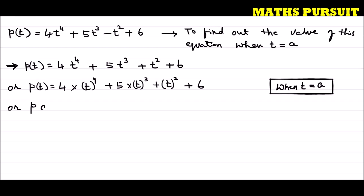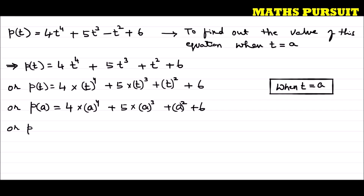When t is equal to a, let us replace the value of t with a. So I can write P(a) = 4·a⁴ + 5·a³ - a² + 6, or in other words, P(a) = 4a⁴ + 5a³ - a² + 6.